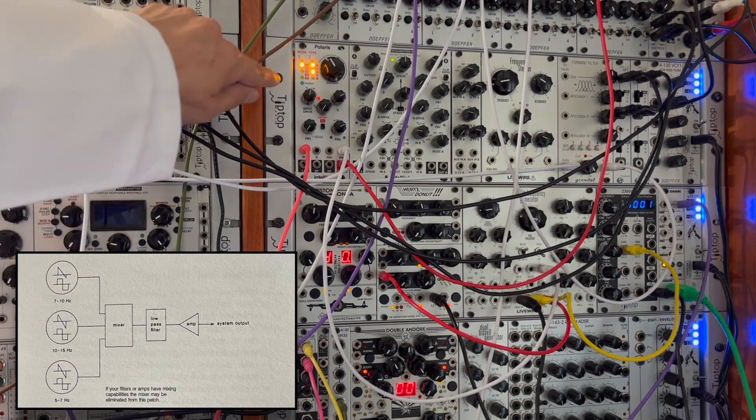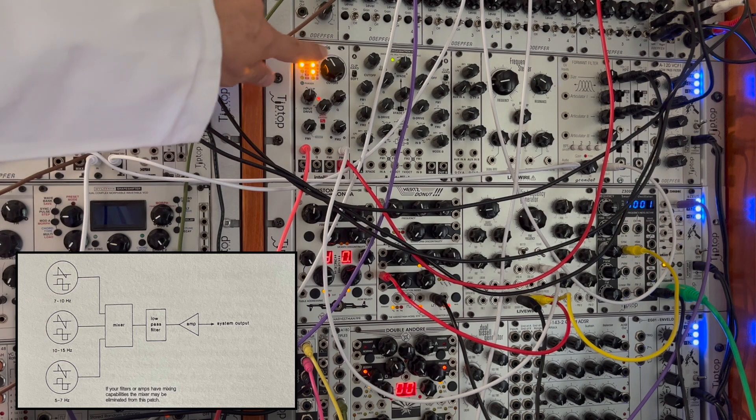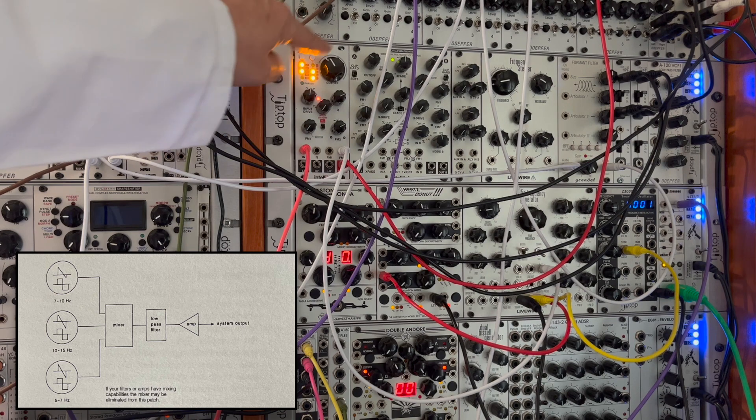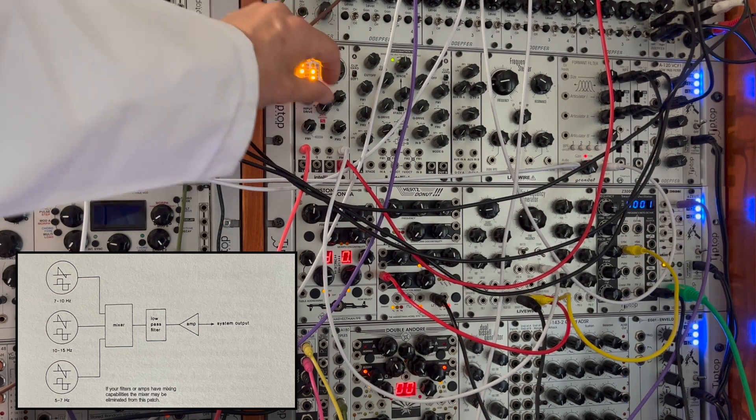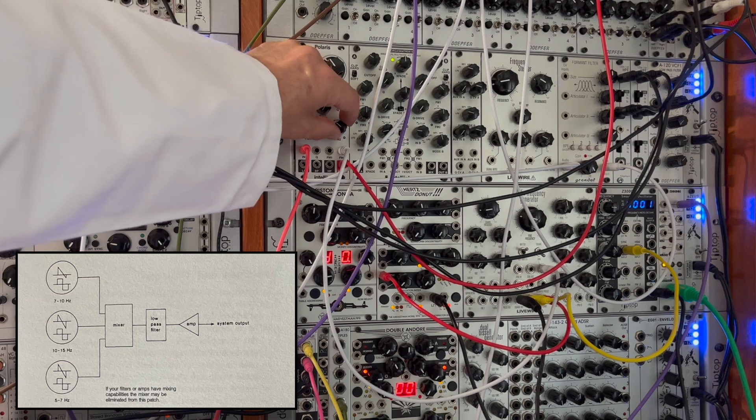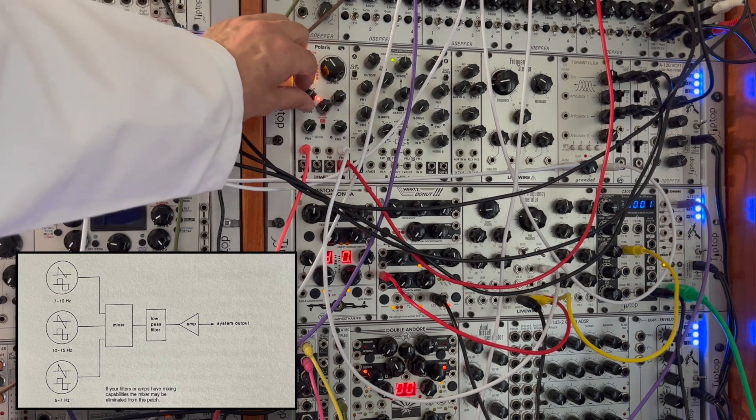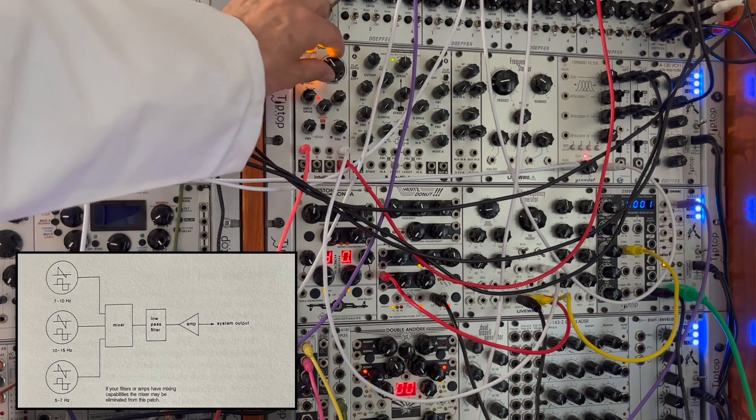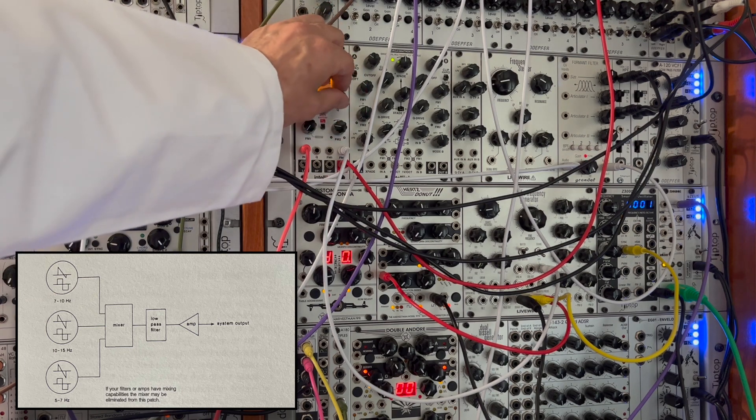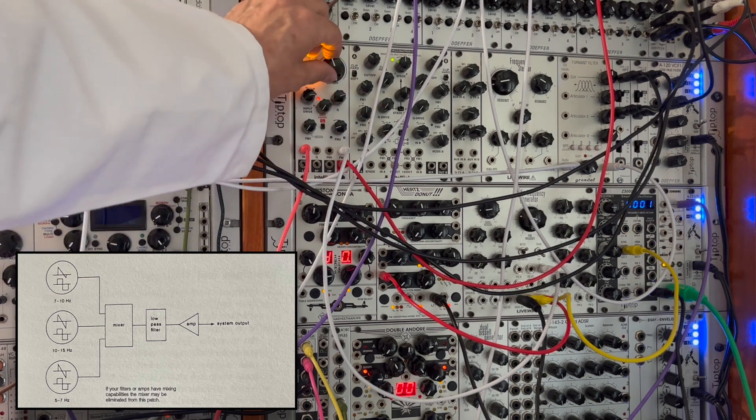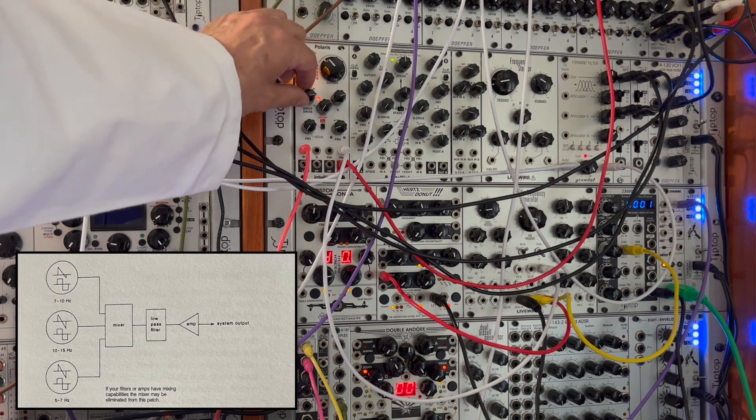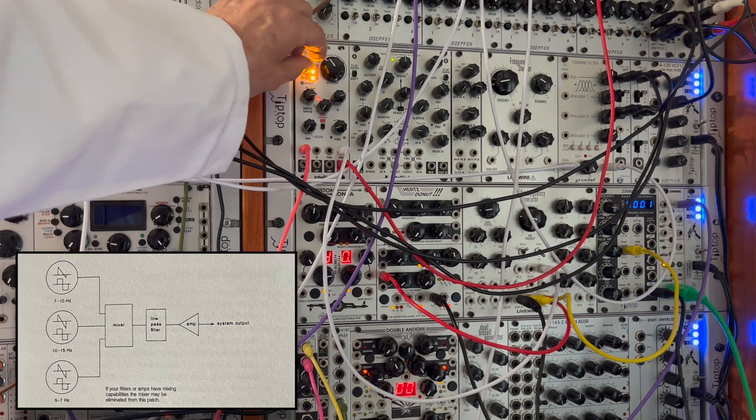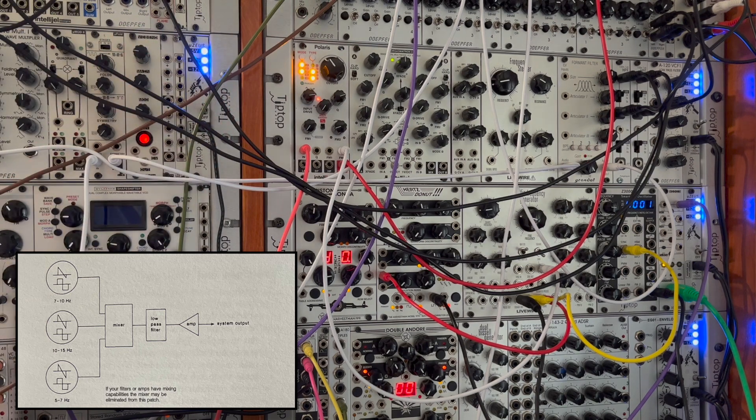And for another simple variation, I can change the Polaris filter type from its low-pass filter to a bandpass filter. And I'll make some adjustments to the gain, and my modulation, and my cutoff. And there we have it, some bangin' Buchla-style techno.